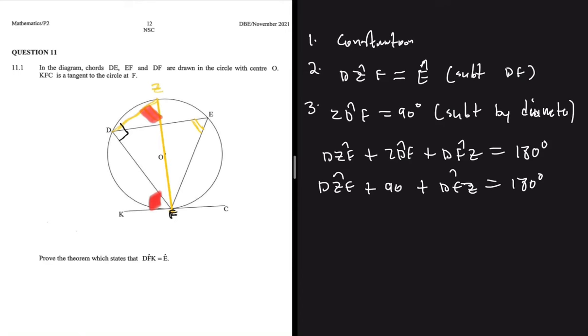If we take this expression to the right-hand side, we're going to get angle DZF equals 180 minus 90 minus DFZ. So DZF will just be equal to 90 degrees minus DFZ.